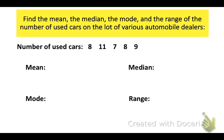So let's look at a situation where we have to find a few things dealing with a set of data. So the number of used cars on five different lots are shown. One car lot has eight cars. One has 11. One has seven. One has eight. And one has nine.